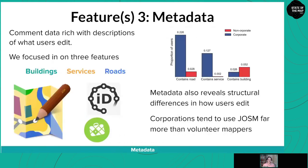The final set of features focused on what users edit and associated metadata. The changeset comment data is rich with descriptions of what users edit. We focused on three features: buildings, services, and roads. We find that corporations tend to edit more roads and services, whereas non-corporate users tend to focus more on buildings and some roads. We also looked at metadata like the source of the edit and the editor used, and then combined everything into one big feature space.